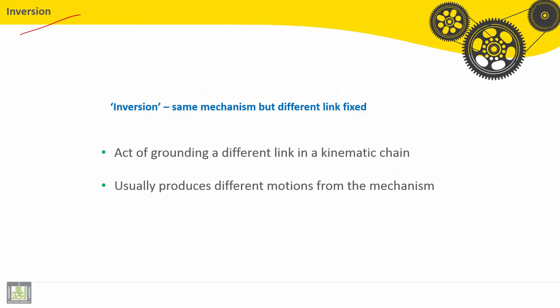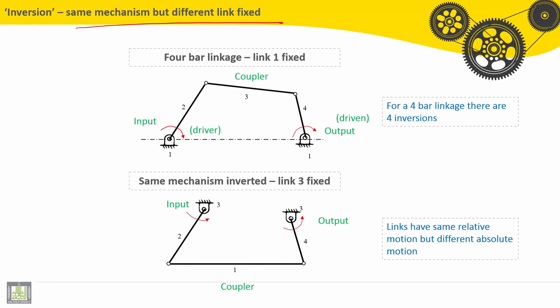Inversion is the same mechanism but different link fixed. It's the act of grounding a different link in a kinematic chain that usually produces different motions from the mechanism. Same mechanism but different link fixed - this is the inversion.